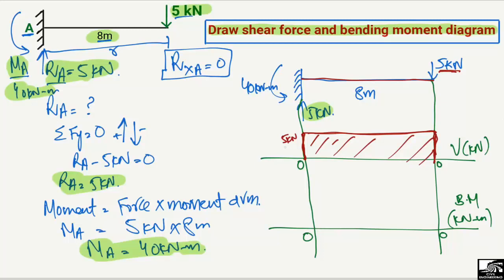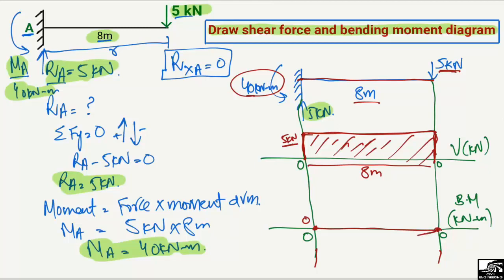To draw the bending moment diagram, we use the shear force diagram. The shear force rectangle has a height of 5 kilonewtons and a base of 8 meters. The area of this rectangle gives the bending moment value. Starting from the free end where the moment is zero, the diagram slopes linearly down to minus 40 kilonewton·meters at the fixed support.